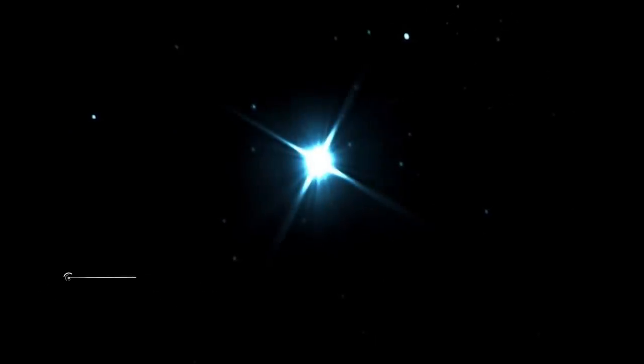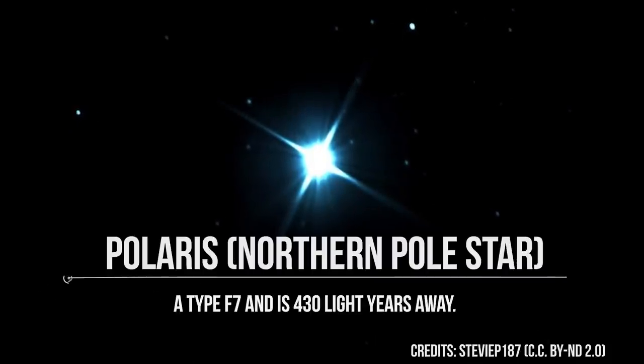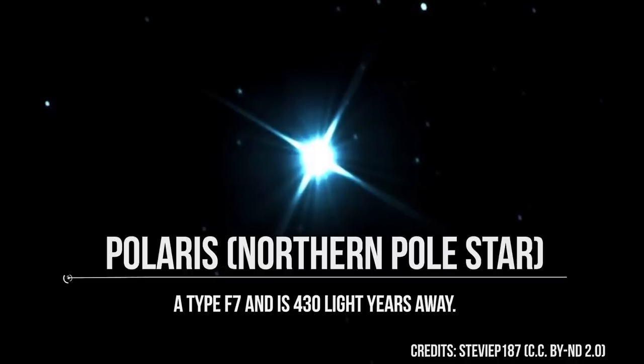They are likely to represent the brightest and hottest main-sequence stars that could possibly allow life. The best example of F-type stars is Polaris, the current northern pole star, a type F7 and is 430 light-years away.